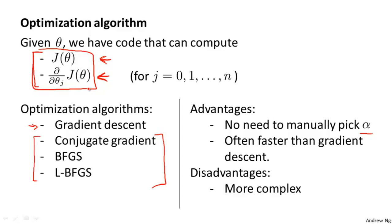These algorithms actually do more sophisticated things than just pick a good learning rate, and so they often end up converging much faster than gradient descent. A detailed discussion of exactly what they do is beyond the scope of this course.